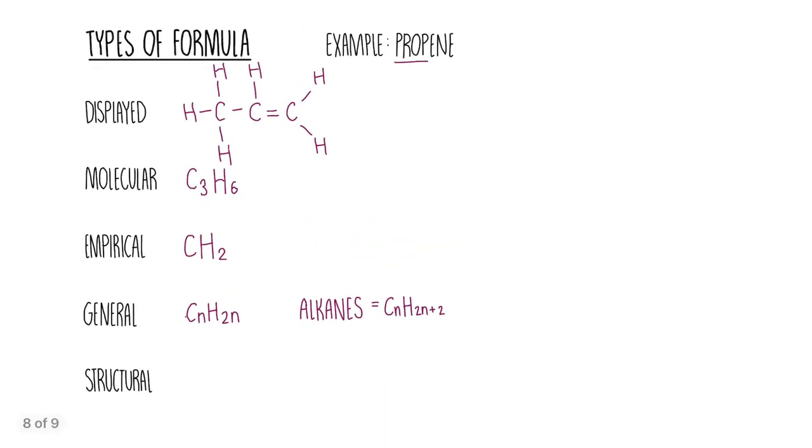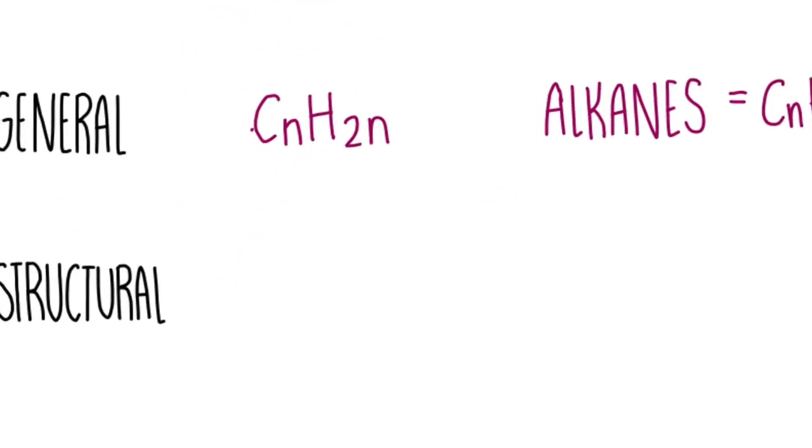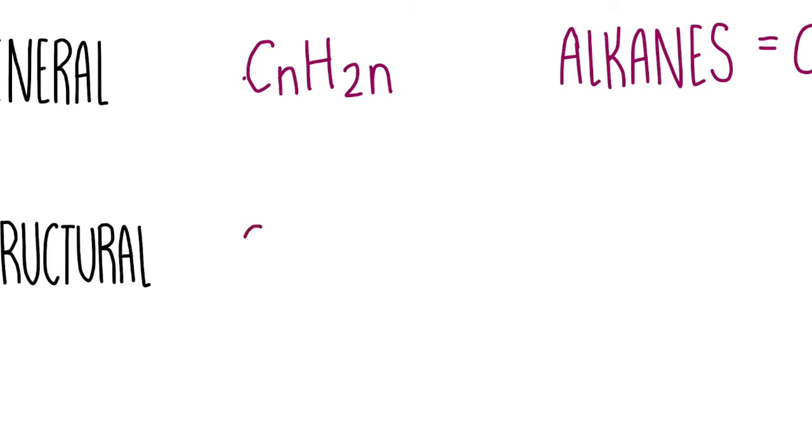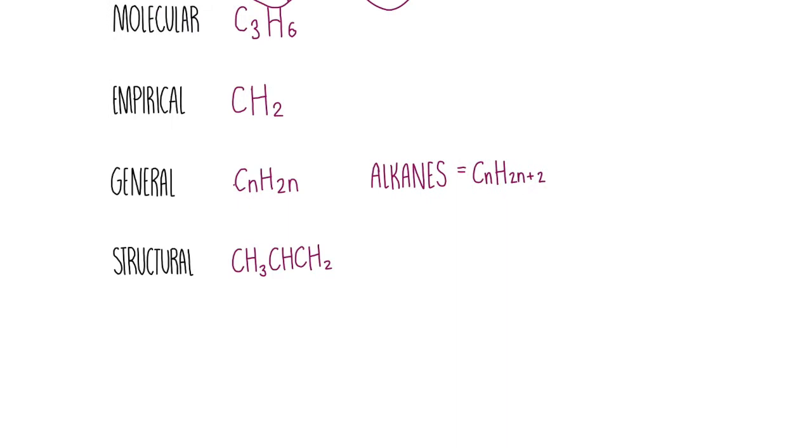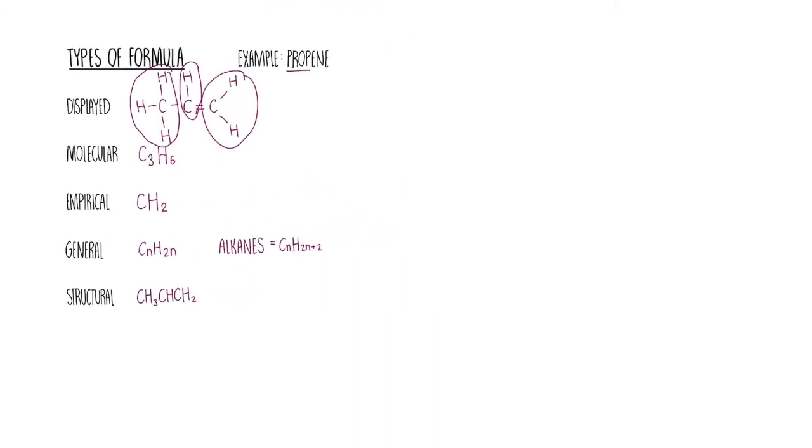The last one, the structural formula, kind of just involves us writing out the groups of atoms as a list. In this case, we're going to write out this group of atoms, CH3. Then this group here, CH3. Then this one, CH, double bound to the carbon. Then this last one, CH2 over here. So the structural formula could be CH3CHCH2. We just write it out like that so we can see how they're connected to each other but without having to draw it all out.